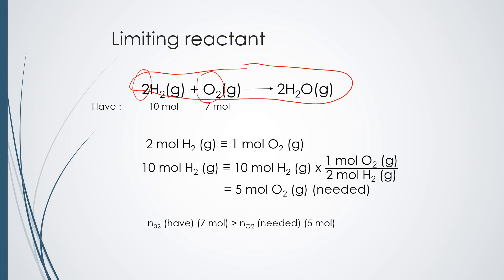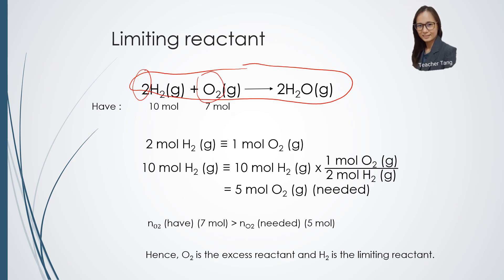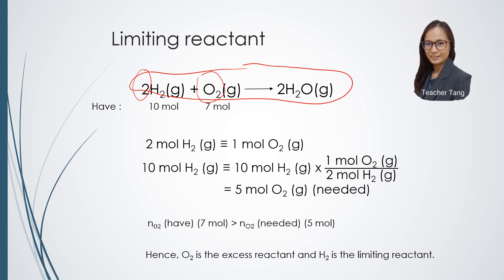We can see that we have 7 moles of oxygen gas, but we only need 5 moles of oxygen gas. So what we have is more than what we need. In other words, oxygen gas here is the excess reactant, while hydrogen gas is the limiting reactant.